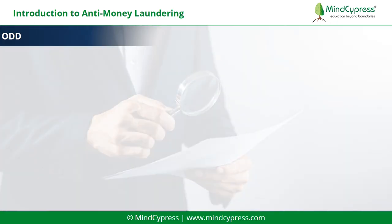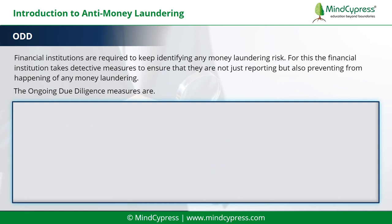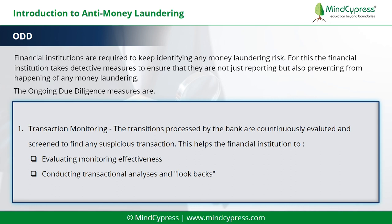Let's understand ODD. Financial institutions are required to keep identifying any money laundering risk. For this, the financial institution takes detective measures to ensure they are not just reporting but also preventing the occurrence of any money laundering. The ongoing due diligence measures include: 1. Transaction monitoring — the transactions processed by the bank are continuously evaluated and screened to find any suspicious transaction. This helps the financial institution in evaluating monitoring effectiveness, conducting transactional analyses, and lookbacks.